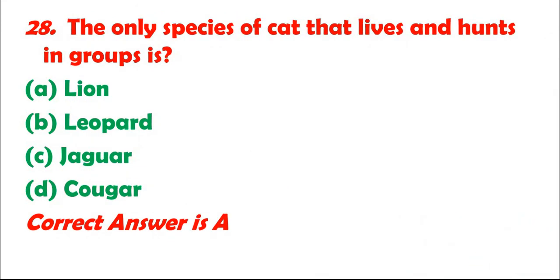Question 28: The only species of cat that lives and hunts in groups is: A. Lion. B. Leopard. C. Jaguar. D. Cougar. Correct answer is A.